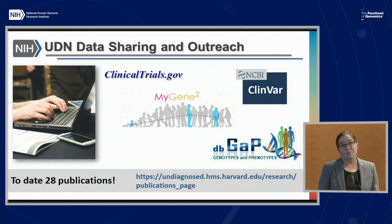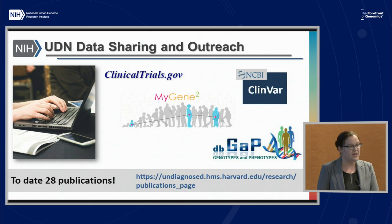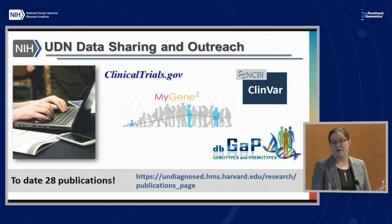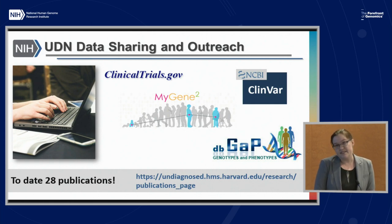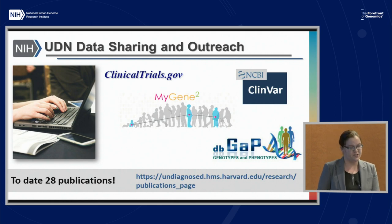The UDN also has data available in more traditional ways. There are 28 publications so far, most describing individual case studies or new diagnoses. Our information is available on ClinicalTrials.gov, though the UDN is an observational study, not a clinical trial. Some participants share data through MindGene2. We're providing data into dbGaP, and we have over 160 variants shared with ClinVar to date.